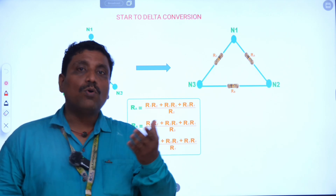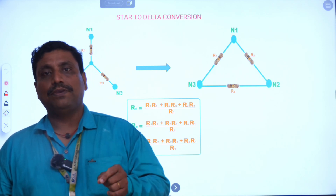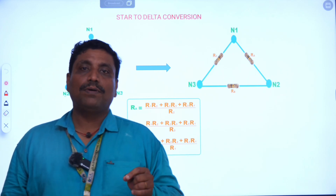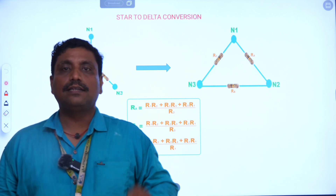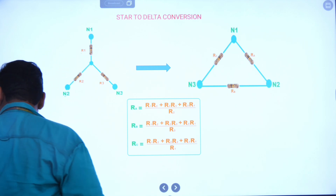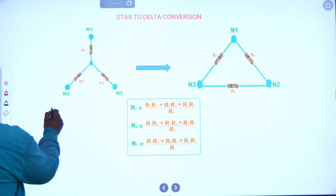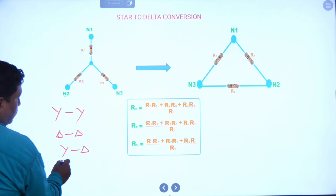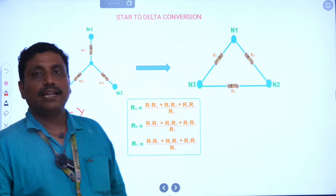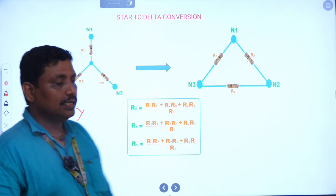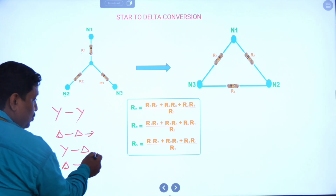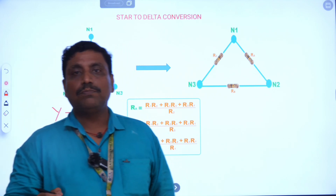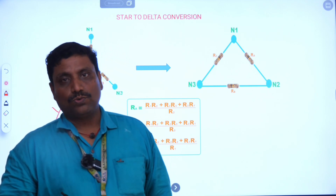In motor control circuits, initially the motor runs on star connection, and after a certain time period, it changes over to delta connection. The purpose is to reduce heavy starting current. Similarly, in transformers, they are also classified based on star-delta transformation: star-star connection, delta-delta connection, star-delta connection, and delta-star connection. The star-delta transformation is very important for simplifying complex circuits.